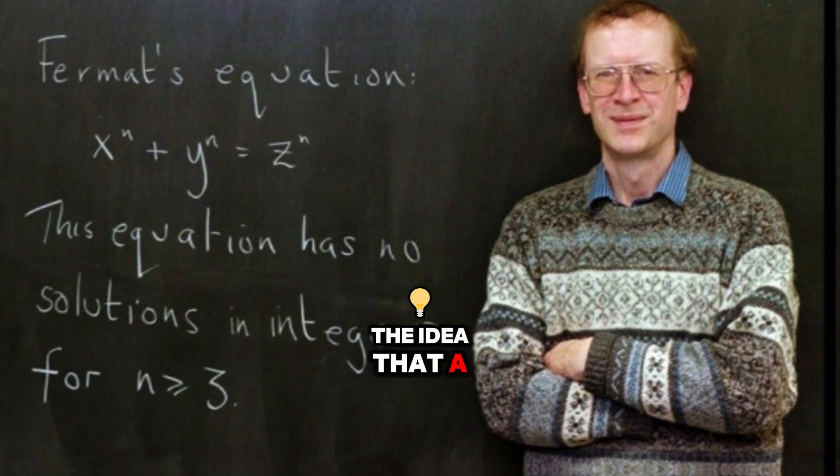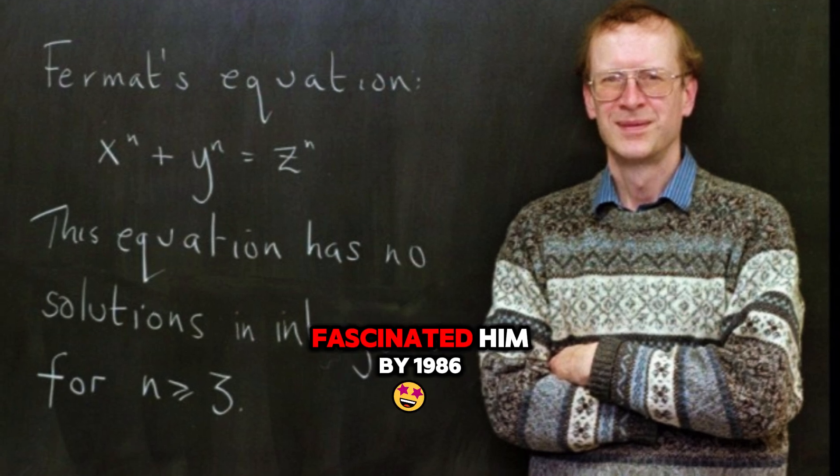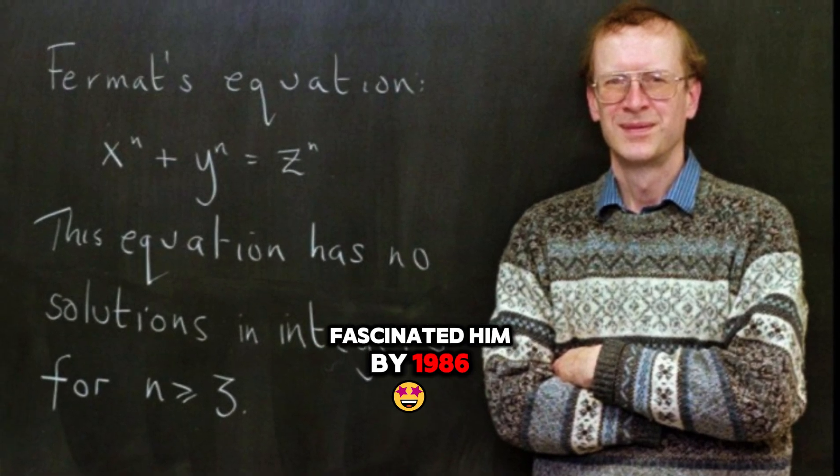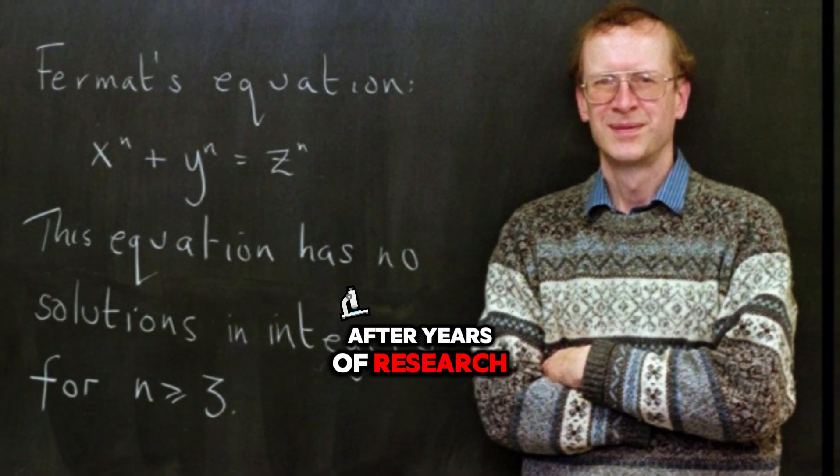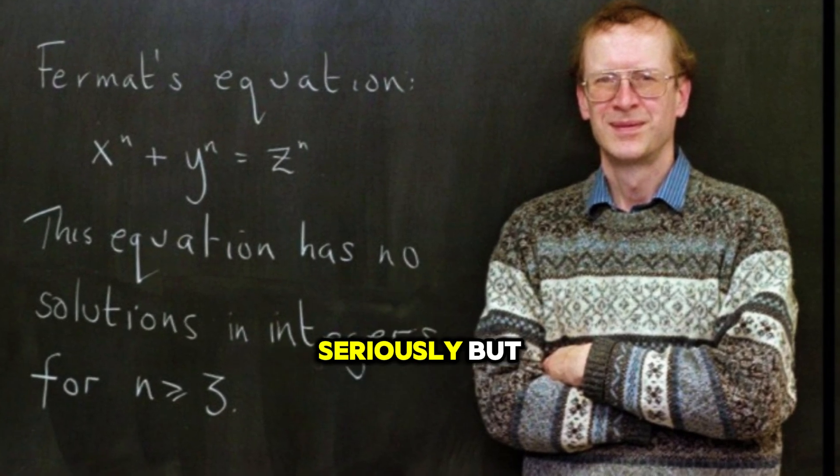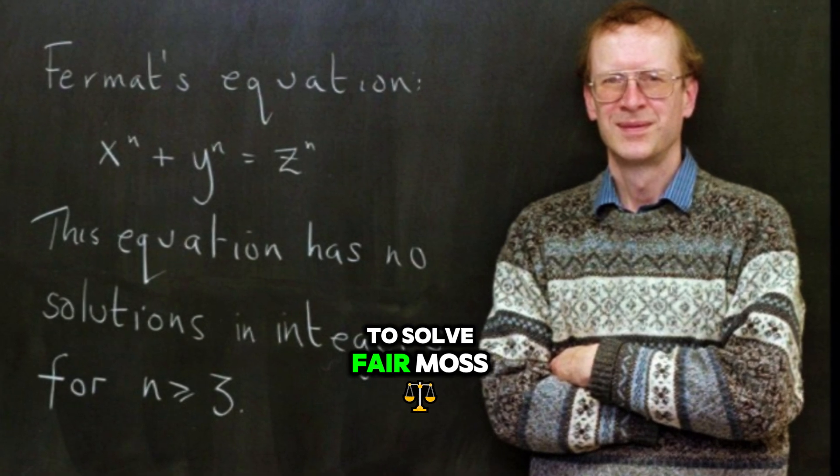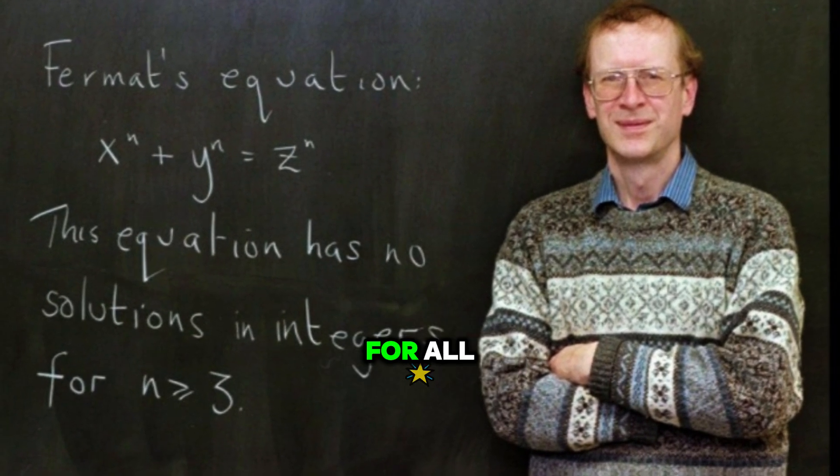The idea that a problem that had remained unsolved for centuries could be solved by one person fascinated him. By 1986, after years of research and planning, Wiles decided it was time to tackle the problem seriously. But he didn't just want to make a small contribution to the field. He wanted to solve Fermat's Last Theorem once and for all.